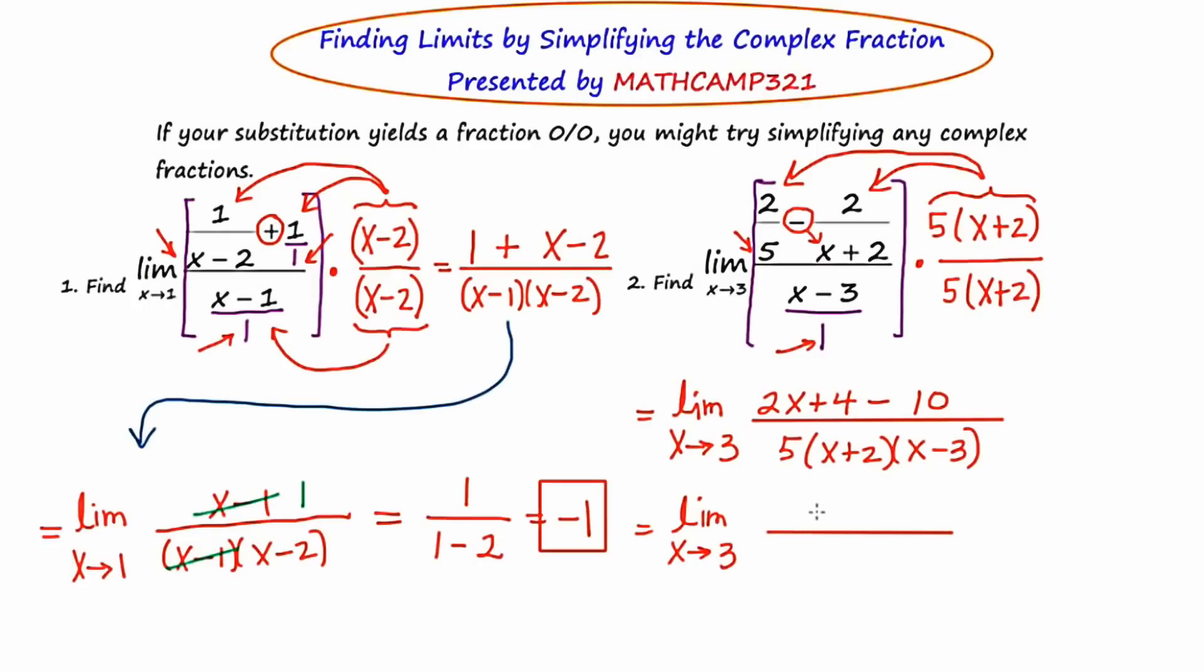Okay, and I'm going to do a little bit more cleaning up on the top. 2x plus 4 minus 10 is really 2x minus 6. The bottom I'll leave as distinct factors, again, just to rewrite.